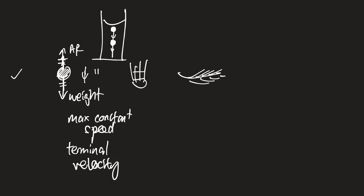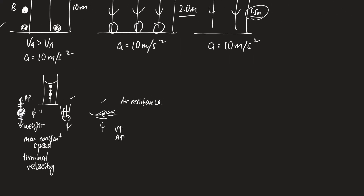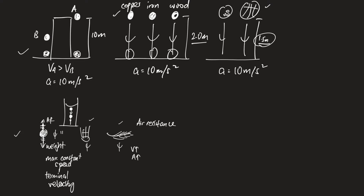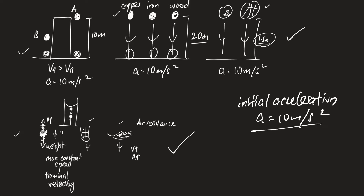For the next two examples — the parachute and feather — what's common is a structure with a large surface area, so air resistance cannot be ignored. When first released, the object undergoes free fall at 10 m/s², but very soon, as speed increases, air resistance increases too. It then reaches its terminal velocity and from that point onwards falls at constant speed. So how would the speed-time graph for these three examples look?